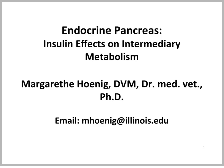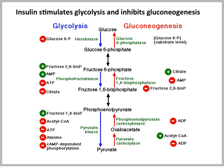This is Dr. Hoenig talking about the insulin effects on intermediary metabolism. Insulin stimulates glycolysis and inhibits gluconeogenesis. Insulin increases the uptake of glucose into insulin-sensitive tissues, such as muscle and adipose tissue, by stimulating the insulin-dependent glucose transporter GLUT4.